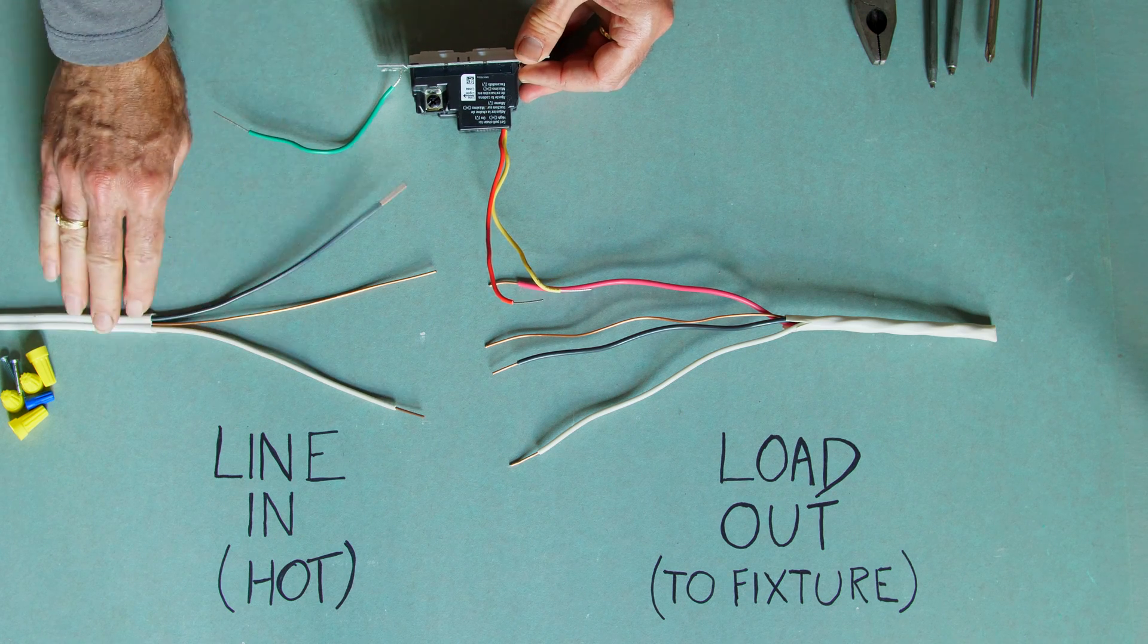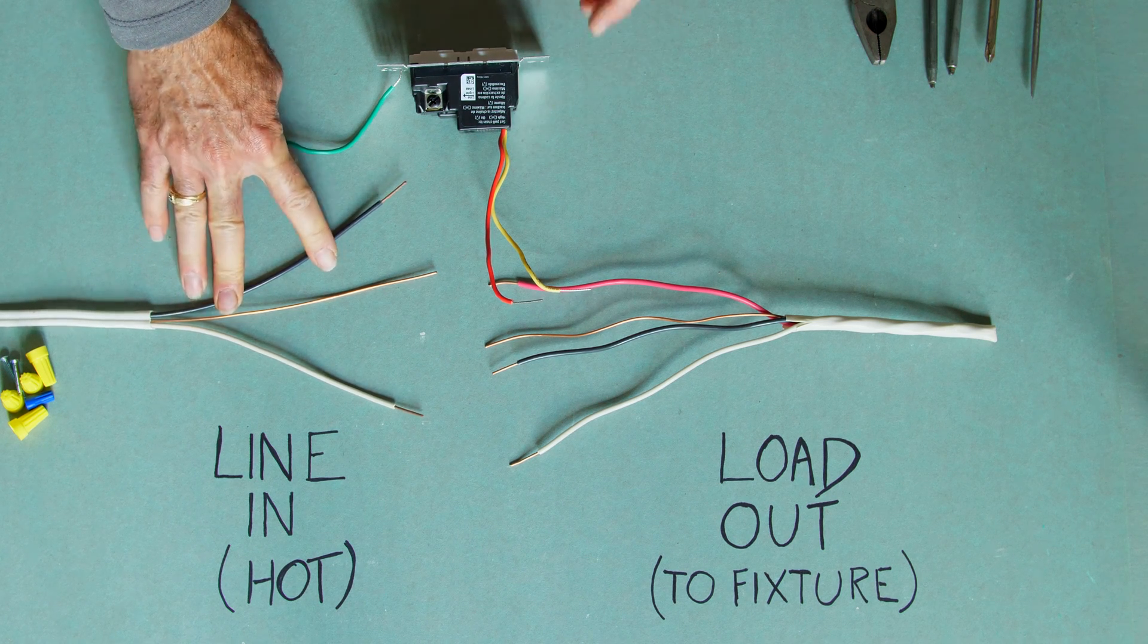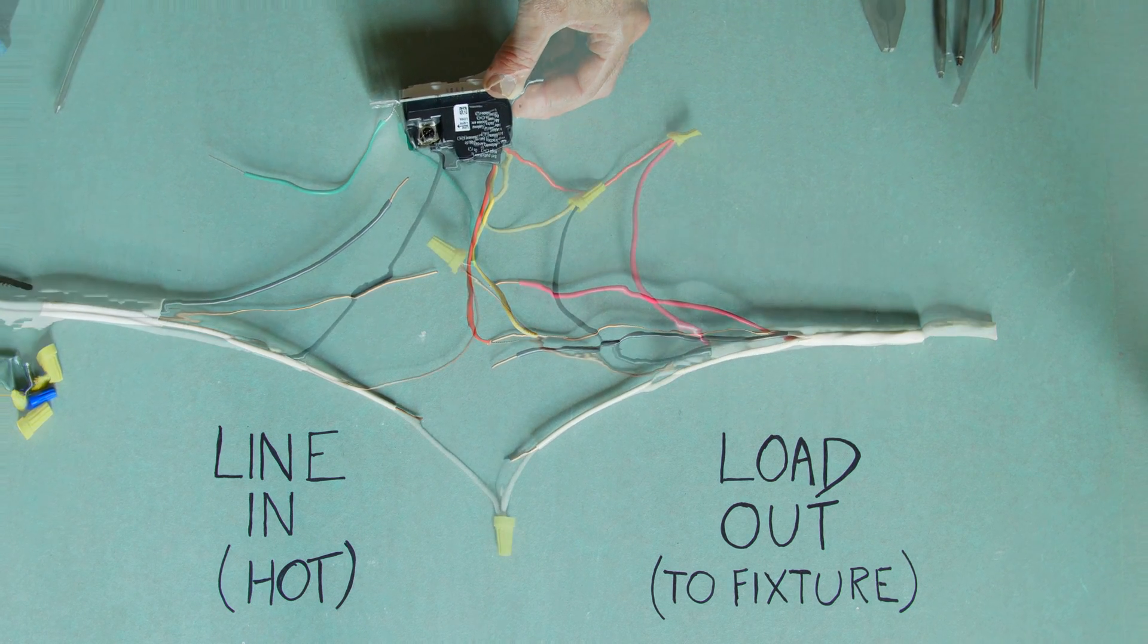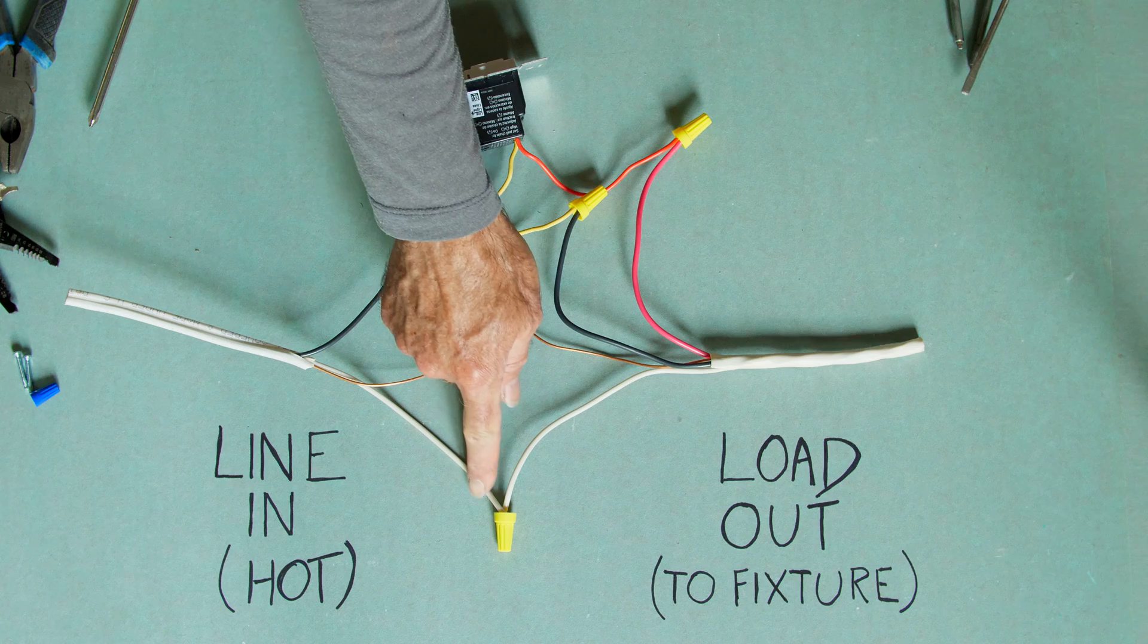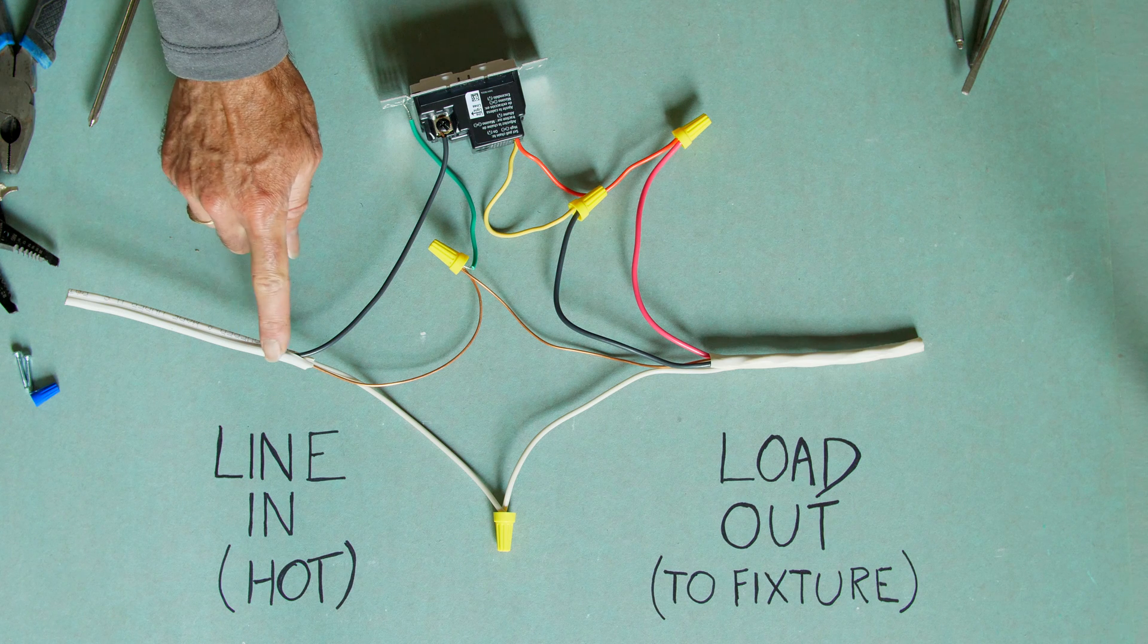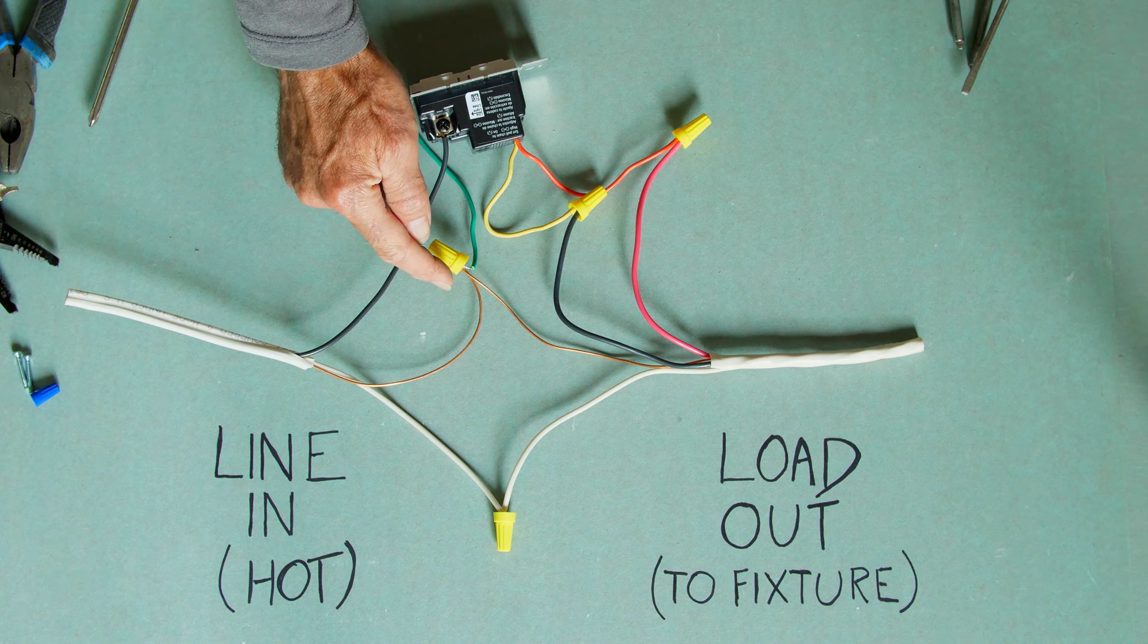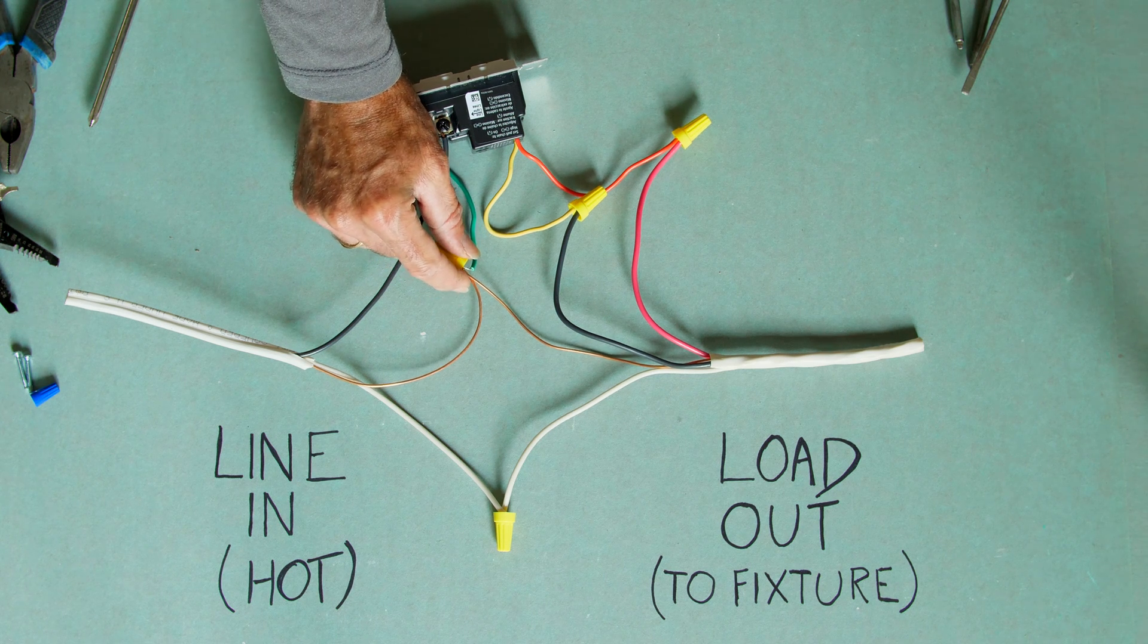So that leaves us just with our black from our line in and this is the hot wire that's giving us our electricity. So that is going to be connected to the screw post on the switch. So when we have all our connections together we can see we've got our white coming from our line in, our power source, to our white of our loadout to our fixture. Our black or hot wire going to the black screw post. We've got all our grounds together and also there should be a ground that's connecting to the electrical box.